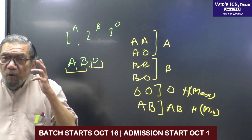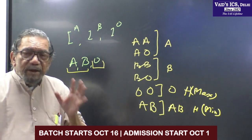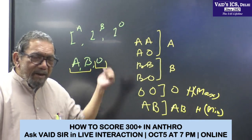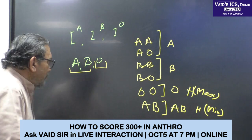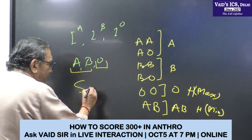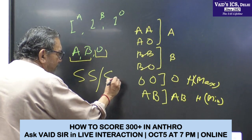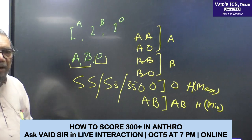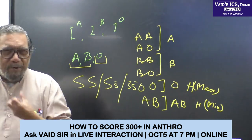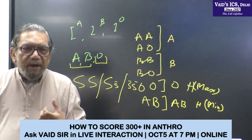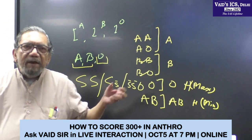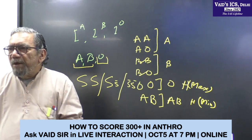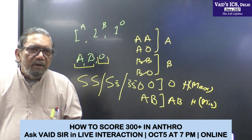You also know about secretors and non-secretors. Our body secretions — gel, nose secretions, ear wax, semen — they contain all these antigens as well. Where these antigens are secreted, we call them secretors, and where they are not secreted, we call them non-secretors.